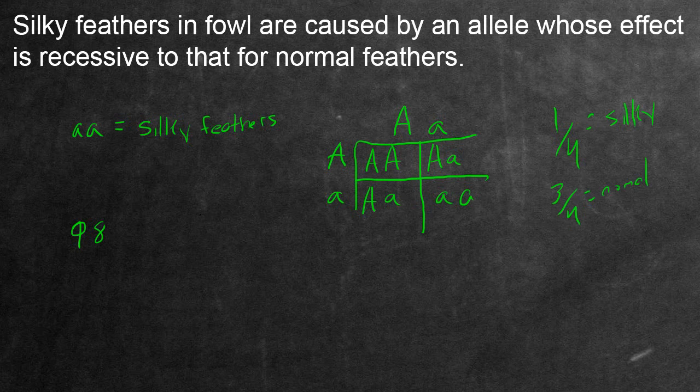So in order to figure out how many of this 98 progeny are going to be normal and silky, you just multiply it by the probability, which is equivalent to the proportion. So all you have to do is 98 multiply 1 fourth, and you'll get the amount of silky birds, approximately.